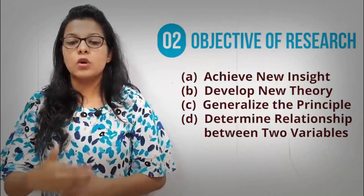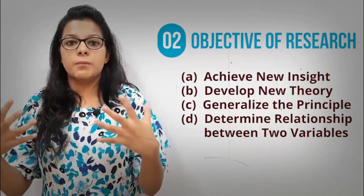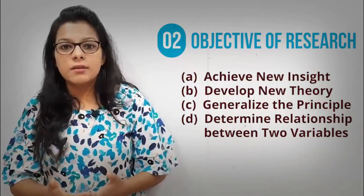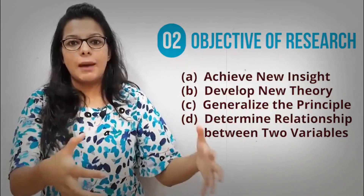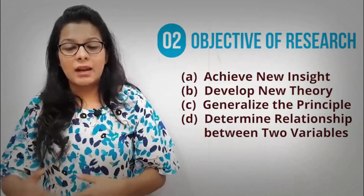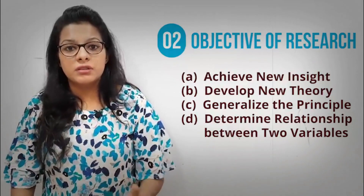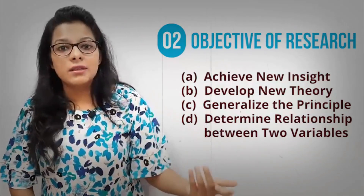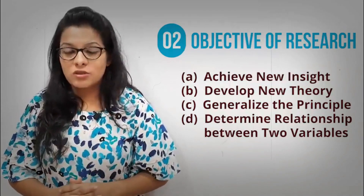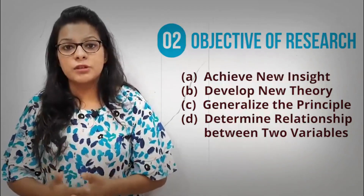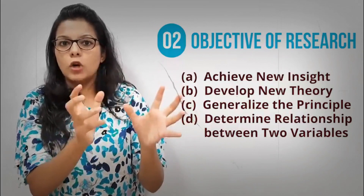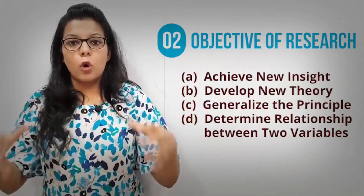Another important objective is to generalize something — to tell a new theory on a universal level. Research helps because if I research who is more responsible, elder siblings or younger siblings, I will research this with a sample — a set of students or kids — but later I can generalize the findings to the entire universe. I can say that every elder or younger sibling behaves in a certain way. Another important objective is that research helps you know the connection between two variables.